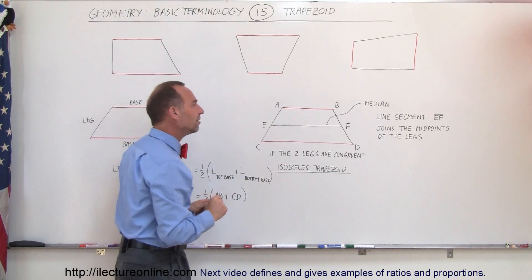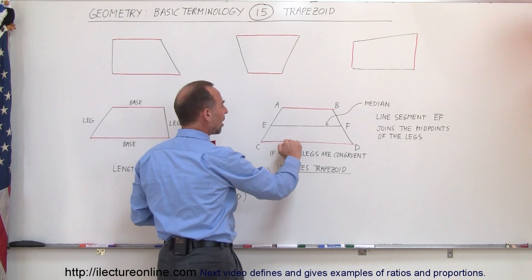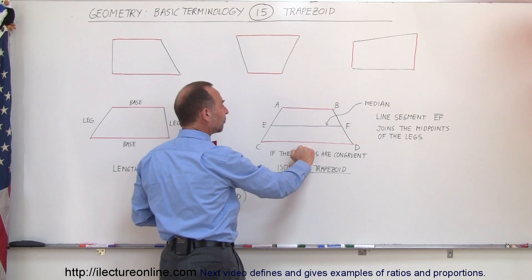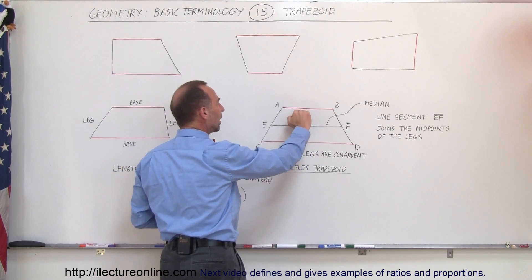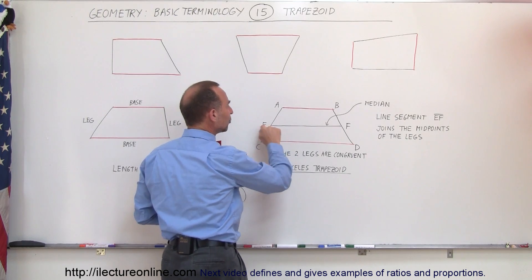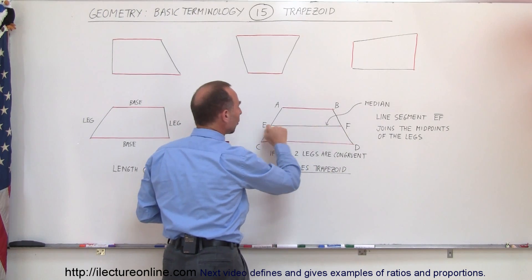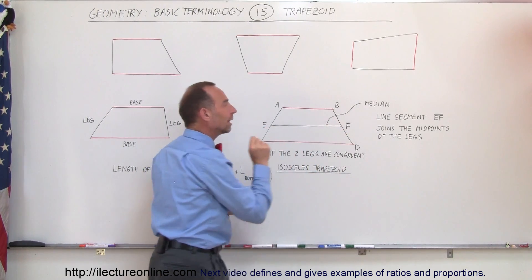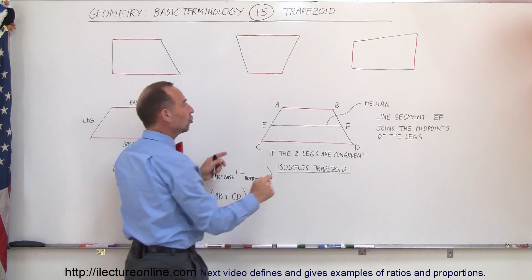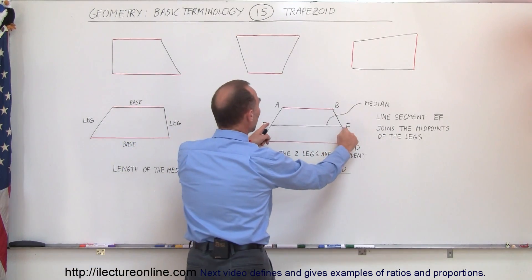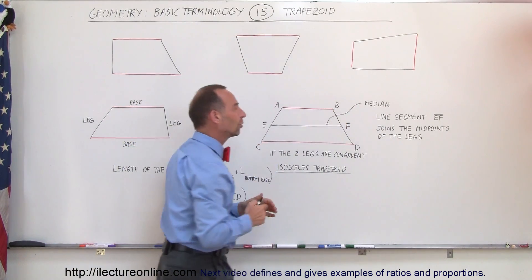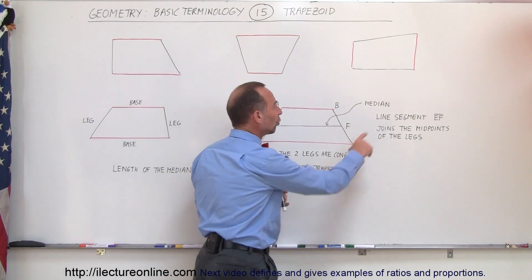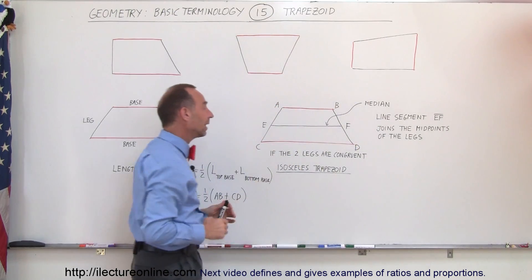We can draw a line halfway between the top base and the bottom base. If we draw a line from one leg to the other leg, that is called the median, and that median connects the two midpoints of the two legs. In this case, the median is the line segment from E to F, joining the midpoints of the legs.